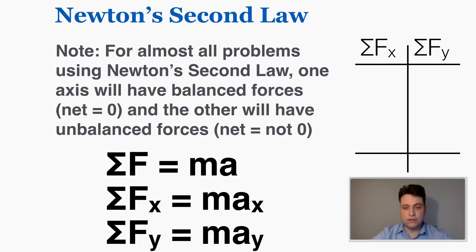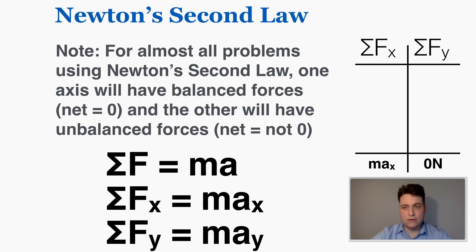A typical force table could look something like this. We could have m times ax in the x direction and zero in the y direction. Most of the objects we deal with will have a net force in one direction and zero net force in the other, because they'll be accelerating along one axis but not along the other axis at the same time. But we can also deal with situations where there are both.